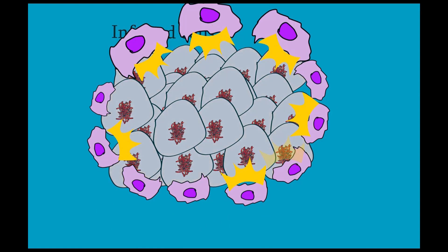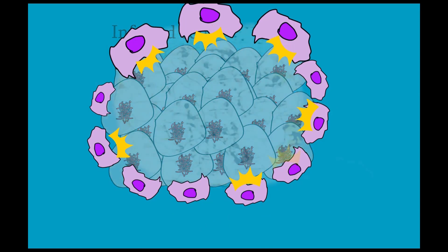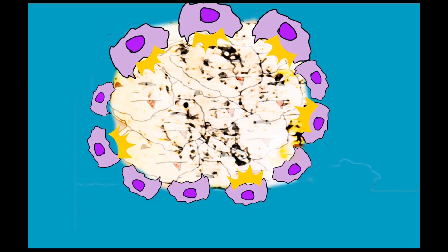As the cells die, they disintegrate but are not completely digested, and the debris of the disintegrated cells clumps together, creating a soft granular mass that has the appearance of cheese.